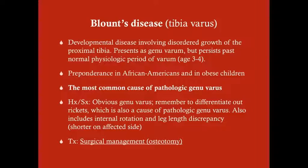If you have a child older than age four with genu varum, this is possibly Blount's disease. There is a preponderance in African Americans as well as in obese children — something to look out for, especially in those populations.